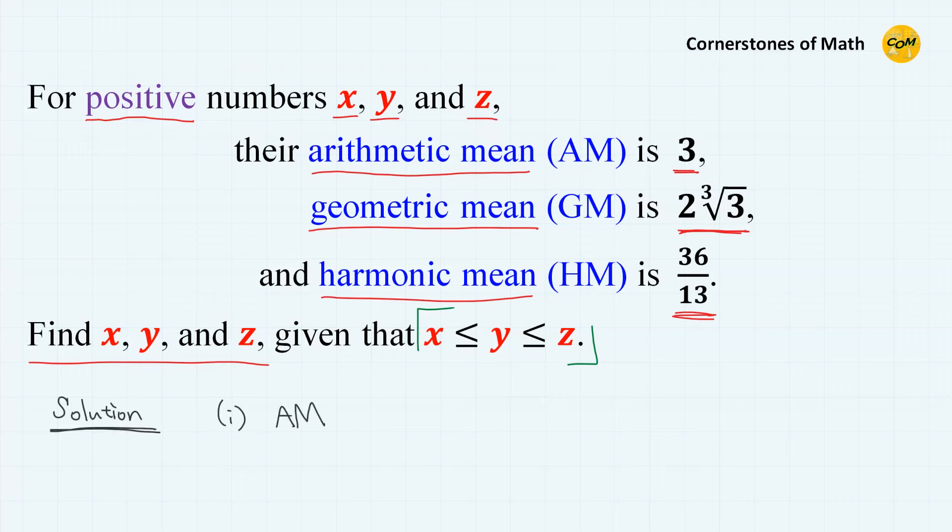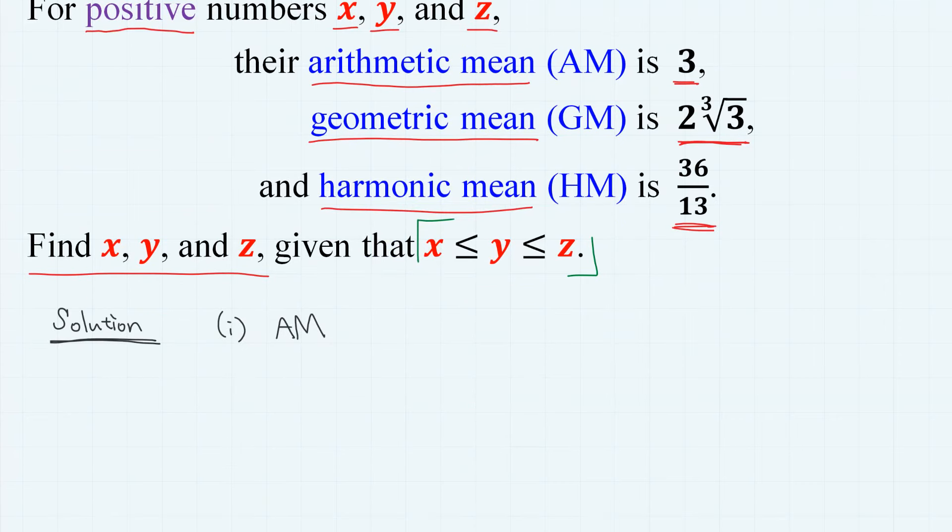Let's set up the equations. First, from the arithmetic mean condition, we have x plus y plus z divided by 3 equals 3, meaning that x plus y plus z equals 9.